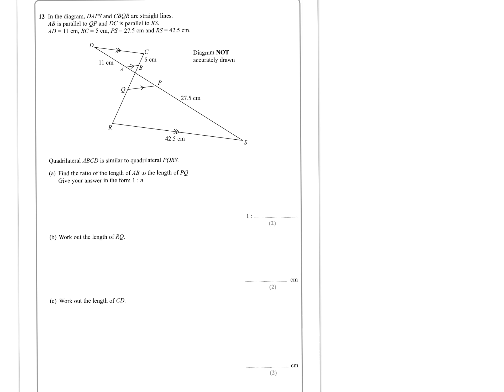Okay, similar shapes. These are straight lines. Sorry, it doesn't say that it's going to be similar shapes, but it's kind of what we're looking at here. It's going to be similar triangles in the diagram. These are straight lines. AB is parallel to QP and DC is parallel to RS. Quadrilateral ABCD is similar to quadrilateral PQRS.